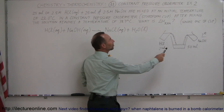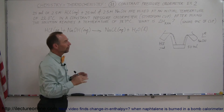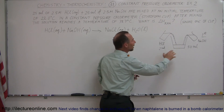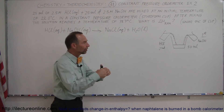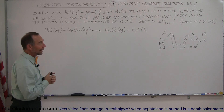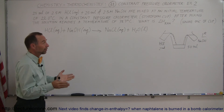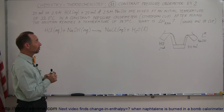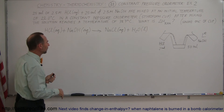We're going to ignore the heat capacity of the cup — it's very small. So we're only going to worry about the solution itself heating up. When we add two 25 milliliter solutions together we end up with 50 milliliters of solution, and we're going to assume that the specific heat of that solution is very similar to the specific heat of water — one calorie per gram per centigrade degree. With that information, let's go ahead and work it out.